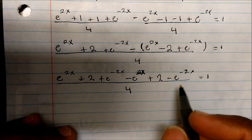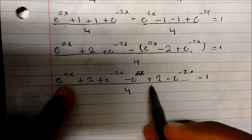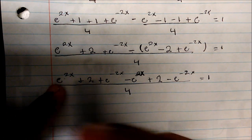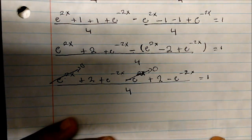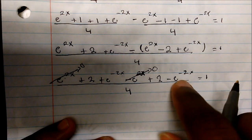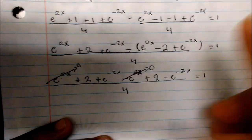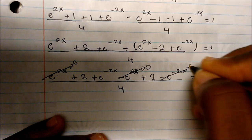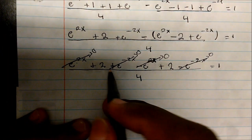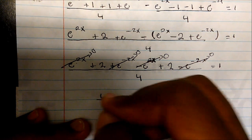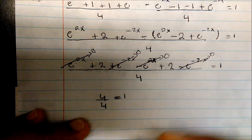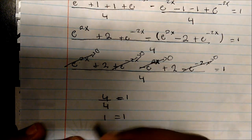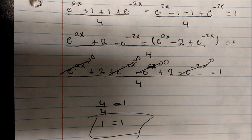We have a positive e to the 2x and a negative e to the 2x — those cancel to 0. And we have a positive e to the negative 2x and a negative e to the negative 2x — those cancel to 0 as well. The only thing left is 2 plus 2, which equals 4. Dividing that by 4 gives 1, so we get 1 equals 1. This is how we prove that cosine hyperbolic squared x minus sine hyperbolic squared x equals 1.